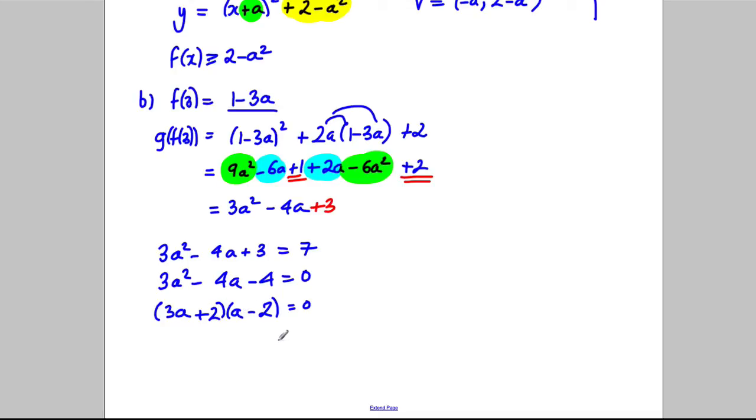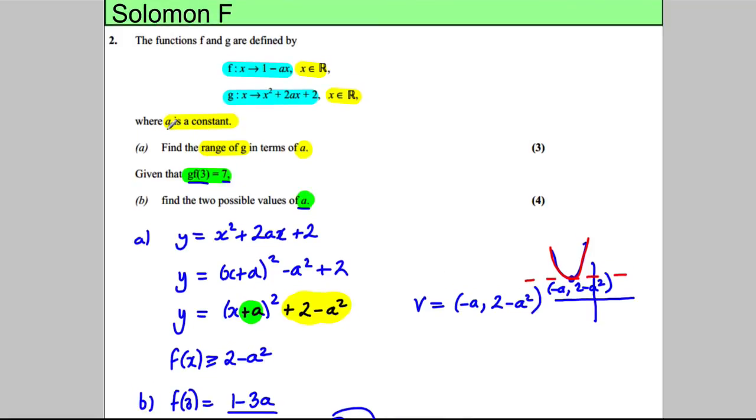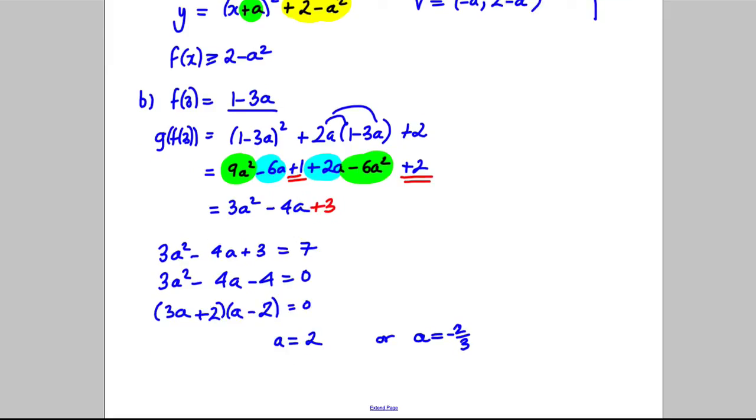Therefore a is equal to 2 or a is equal to negative 2 thirds. Let's just look up the question and see if there's any restrictions on a. It just said a was a constant, it didn't say it had to be anything, and it does ask for two possible values. We've got two possible values: a is 2 and a is negative 2 thirds. So we're done.